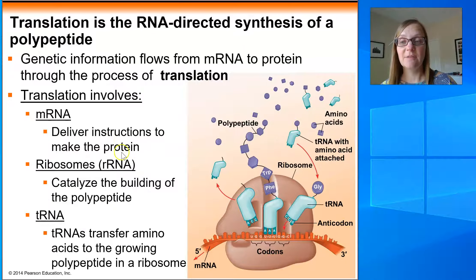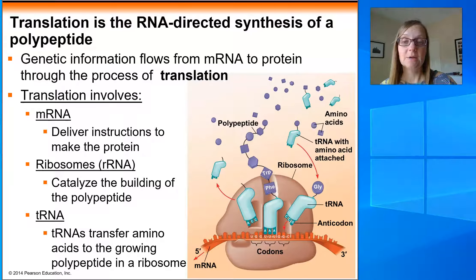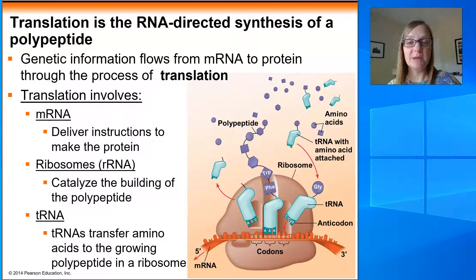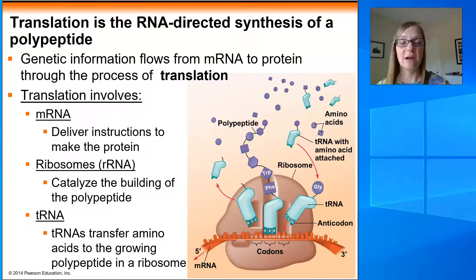The second kind of RNA is ribosomal RNA, or rRNA. A ribosome is made in part from protein and in part from RNA. The RNA found inside the ribosome is called rRNA and it helps to catalyze the building of the polypeptide. The last kind of RNA used in translation is tRNA — the T stands for transfer. Transfer RNAs bring in the correct amino acids and are the link between the mRNA and the polypeptide.